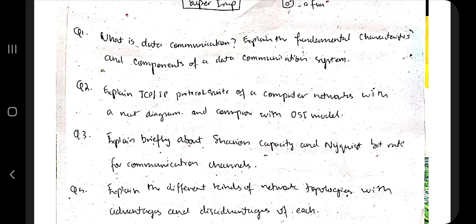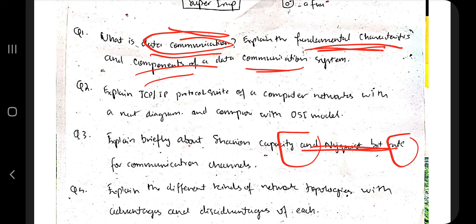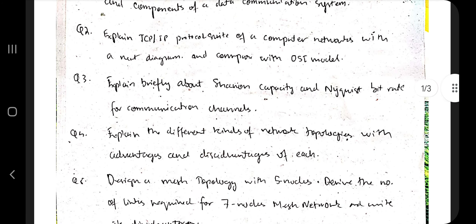The first question is: What is data communication? Explain the fundamental characteristics and components of a data communication system. You have to write the definition, the different aspects and properties — those go under fundamental characteristics. For the components of a data communication system, there is a source, a listener, and a channel in between. Refer to the notes and the video for more information.